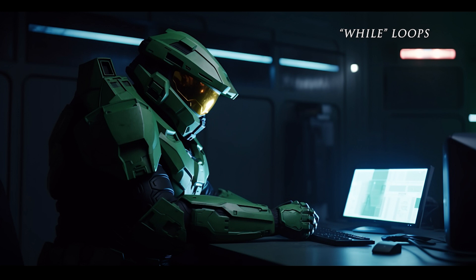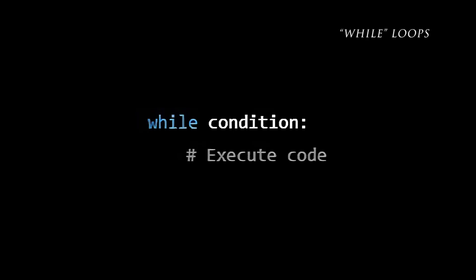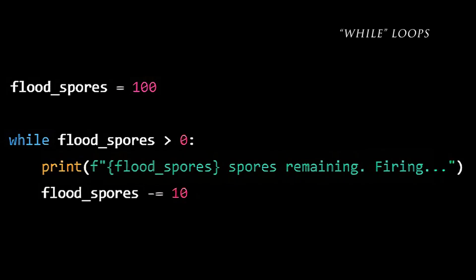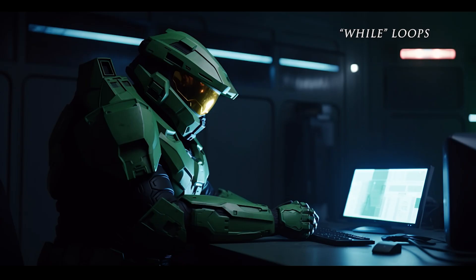Here's the blueprint for a while loop, Spartan: 'while condition, execute code.' Let's say you're eliminating flood spores but they keep reappearing — you can use a while loop to continue the fight until none remain. flood_spores equals 100. While flood_spores is greater than 0: print X amount of flood spores remaining, firing... flood_spores minus equals 10. This will run until the flood has been eliminated and victory has been achieved.